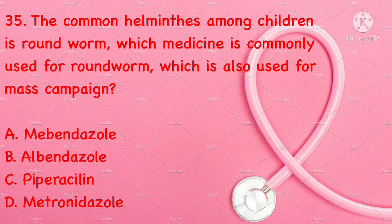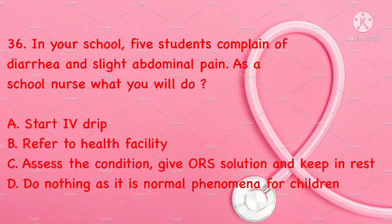The common helminth among children is roundworm. Which medicine is commonly used for roundworm and also used for mass campaigns? Mebendazole, albendazole, piperacillin, or metronidazole. Correct answer is B: albendazole.